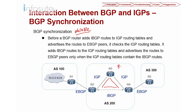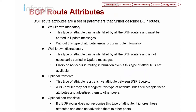This is where we use the concept of a route reflector or a confederation — these are the two methods to solve the synchronization problem. Now let's look into BGP route attributes. In BGP, we categorize route attributes into four categories. The first, and very important, is the well-known mandatory attribute. The second is well-known discretionary. The third is optional transitive, and the fourth is optional non-transitive.